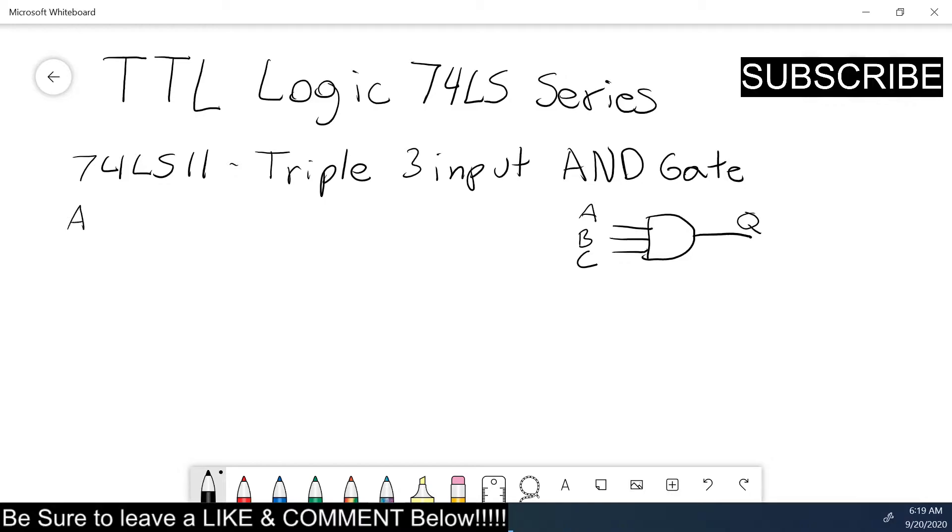And if we do our truth table, we got all zeros 0 1 0 1 0 0 1 1 0 1 1 1. We know this is an AND gate so all the inputs have to be high for it to put out a high so the rest of these are all lows.